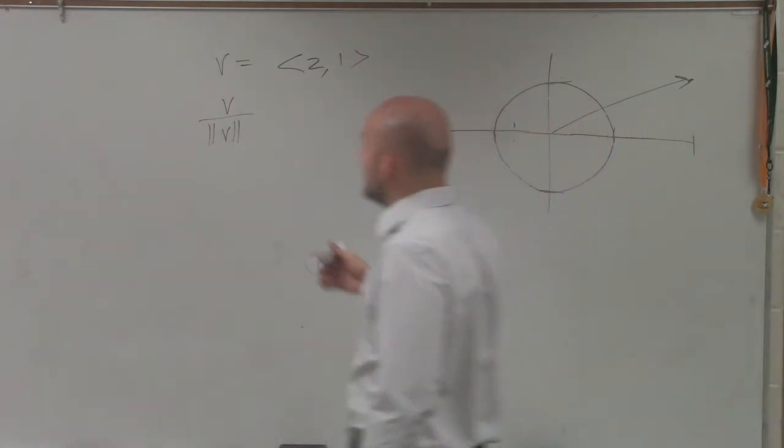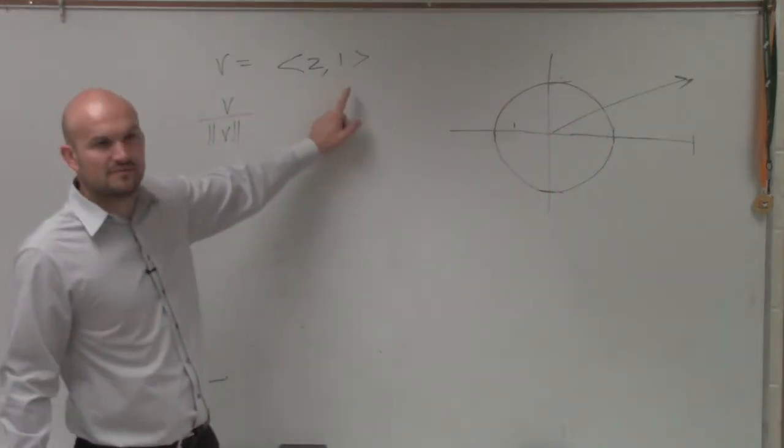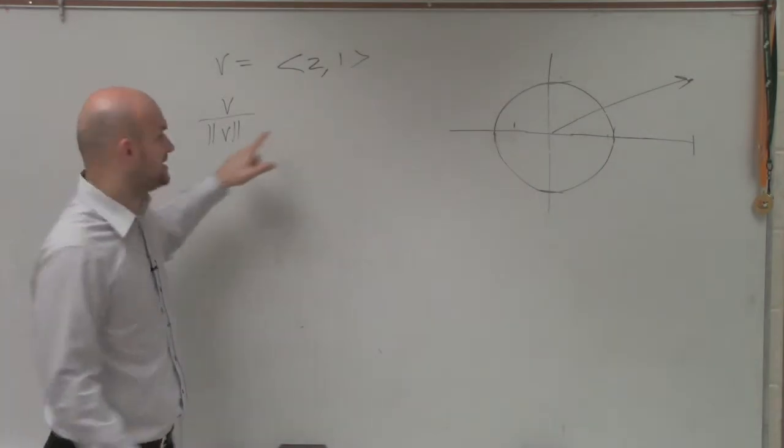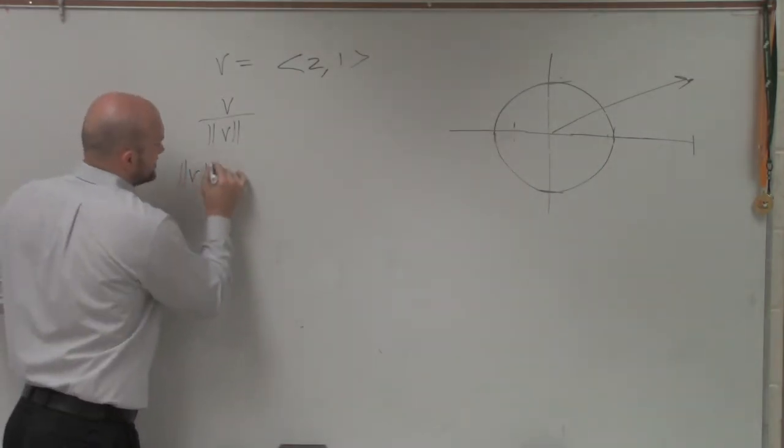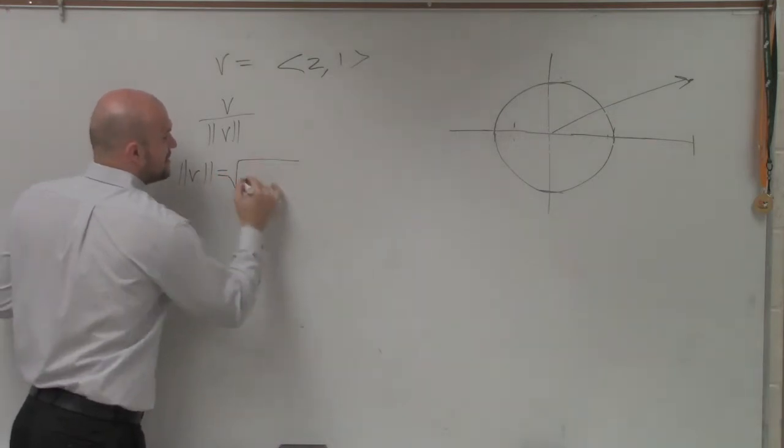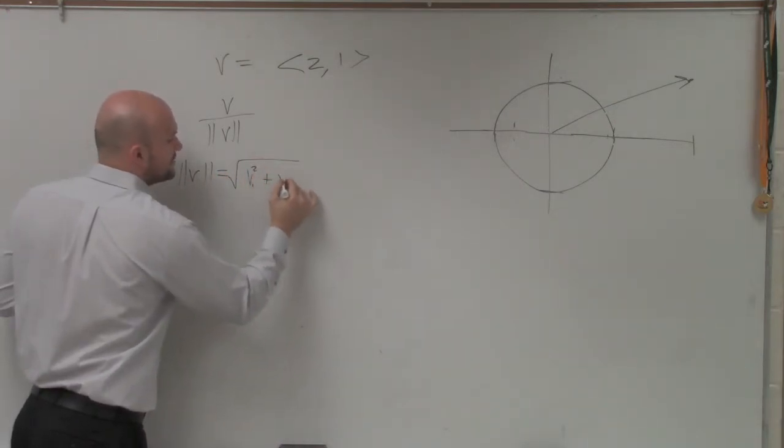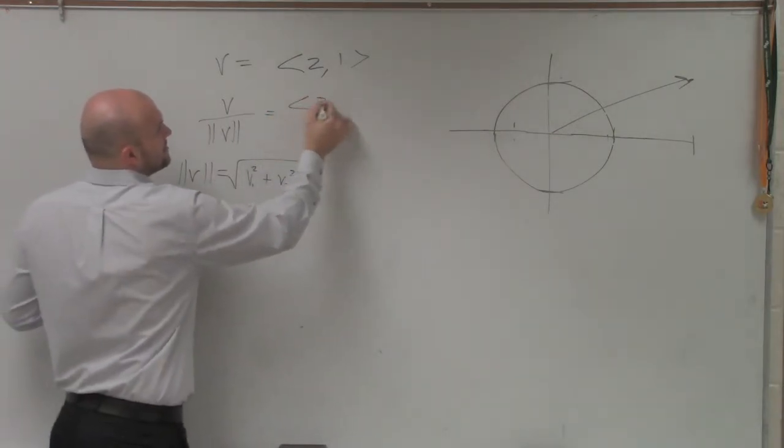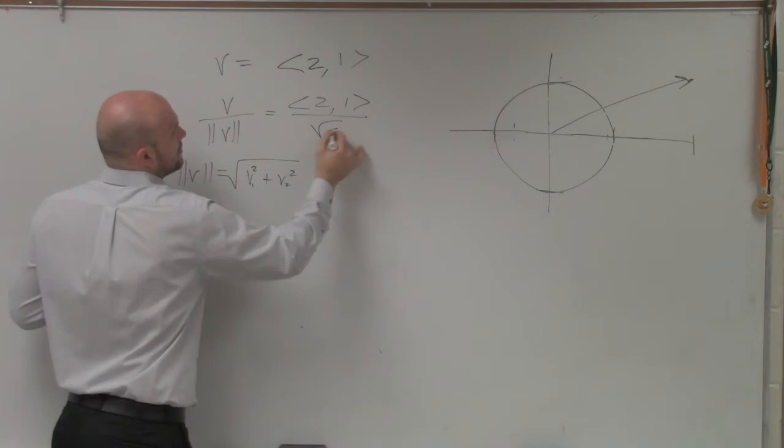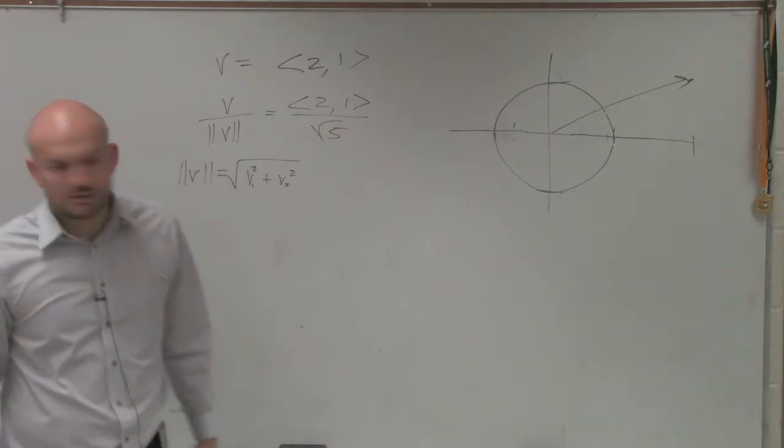And this was something you guys had to do in your homework. Find that unit vector. And when you did that, this would be the square root of 5. The magnitude, you guys remember the magnitude? The magnitude was v1 squared plus v2 squared. So in this case, when I do this problem, I get 2 comma 1 all over the square root of 5.